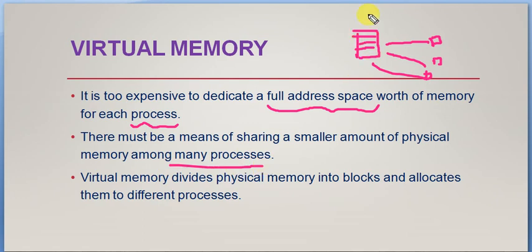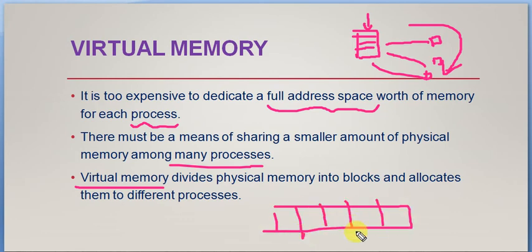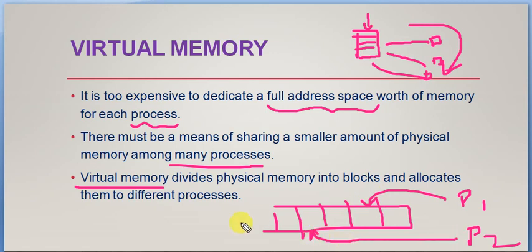The virtual memory actually divides the physical main memory into different blocks and allocates them to different processes. Virtual memory is a concept used for dividing the primary memory into different blocks and sharing these blocks among different processes like P1 or P2. P1 will be utilizing one block and P2 will be utilizing another block. So virtual memory is the concept of dividing and distributing memory blocks to different processes.